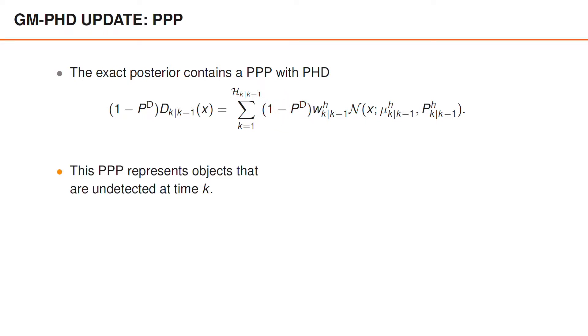As I mentioned above, this Poisson point process represents all objects that are undetected at time k. In the algorithm that we are about to describe, we store the components which come from the Poisson point process as the first components of the Gaussian mixture PHD.